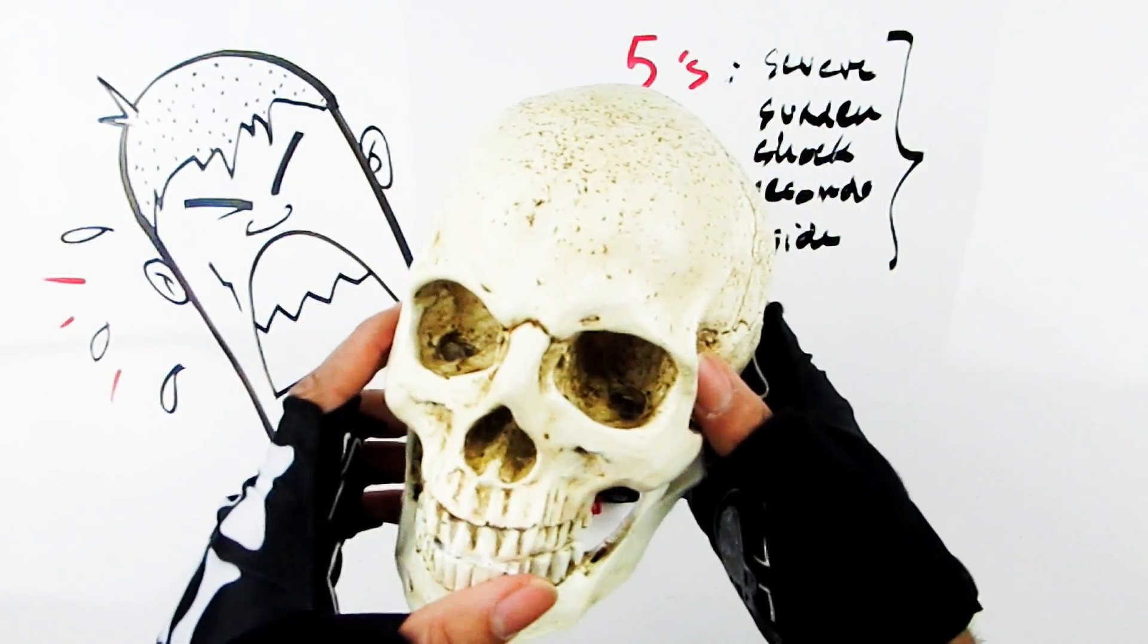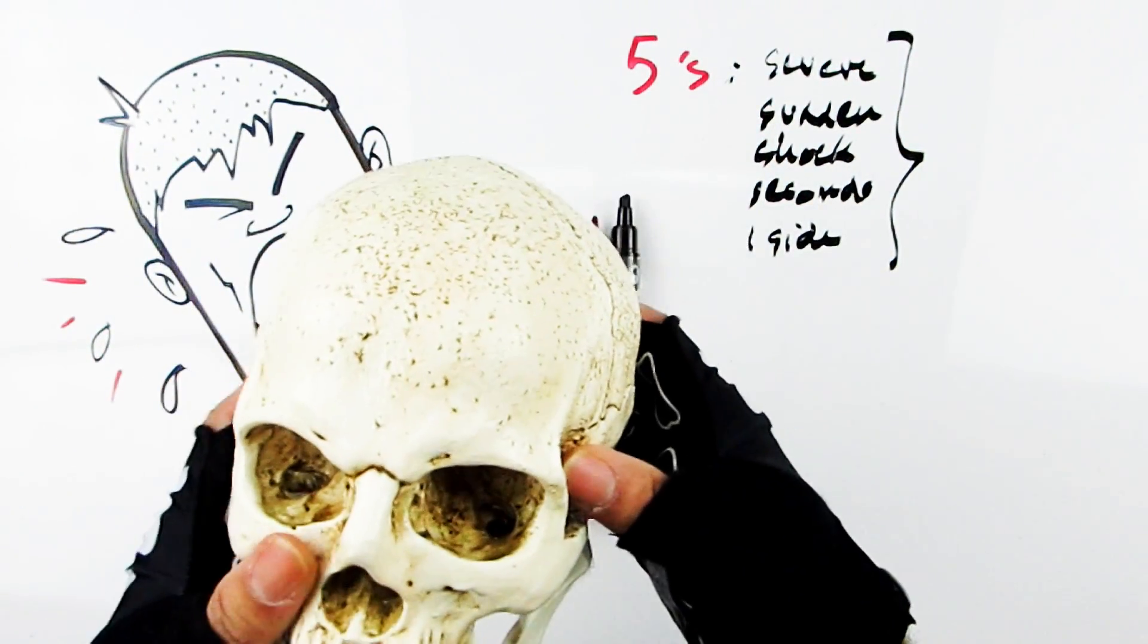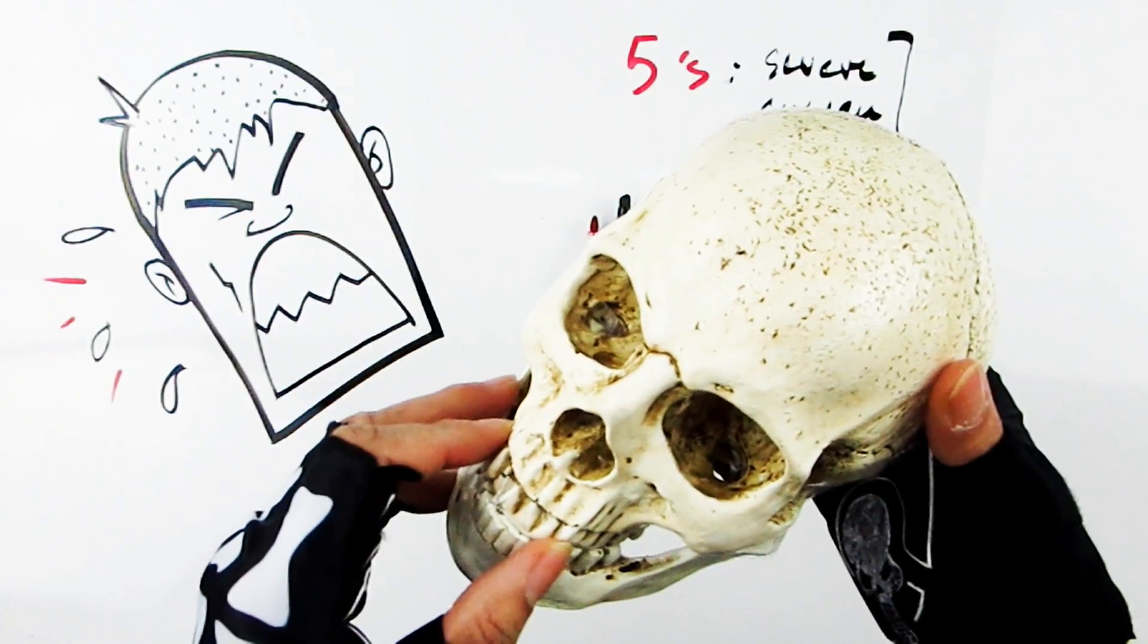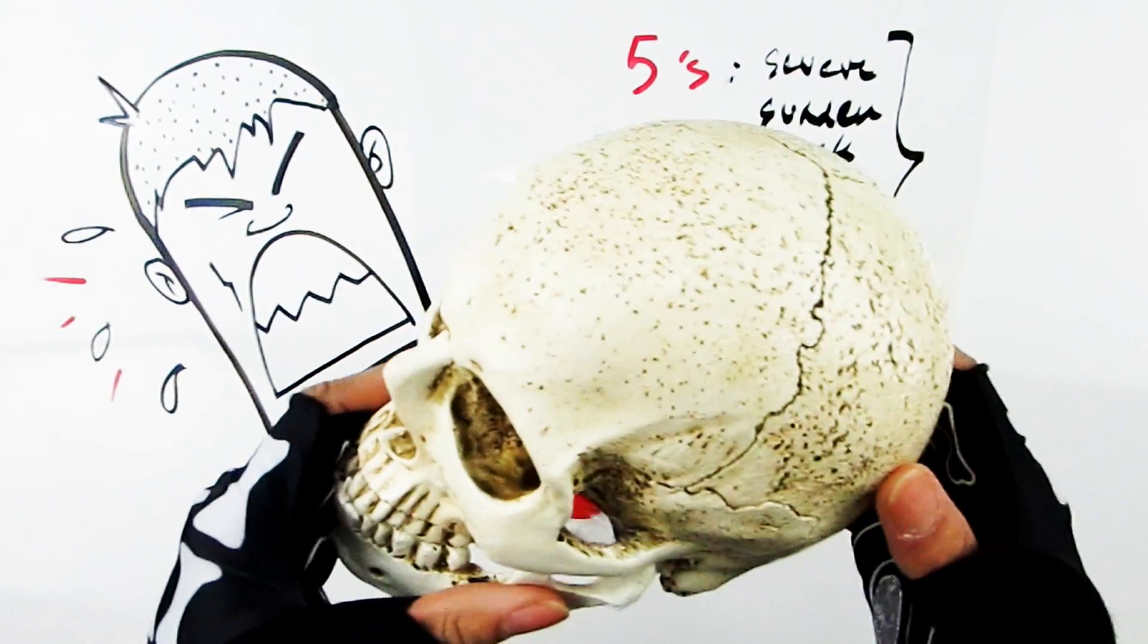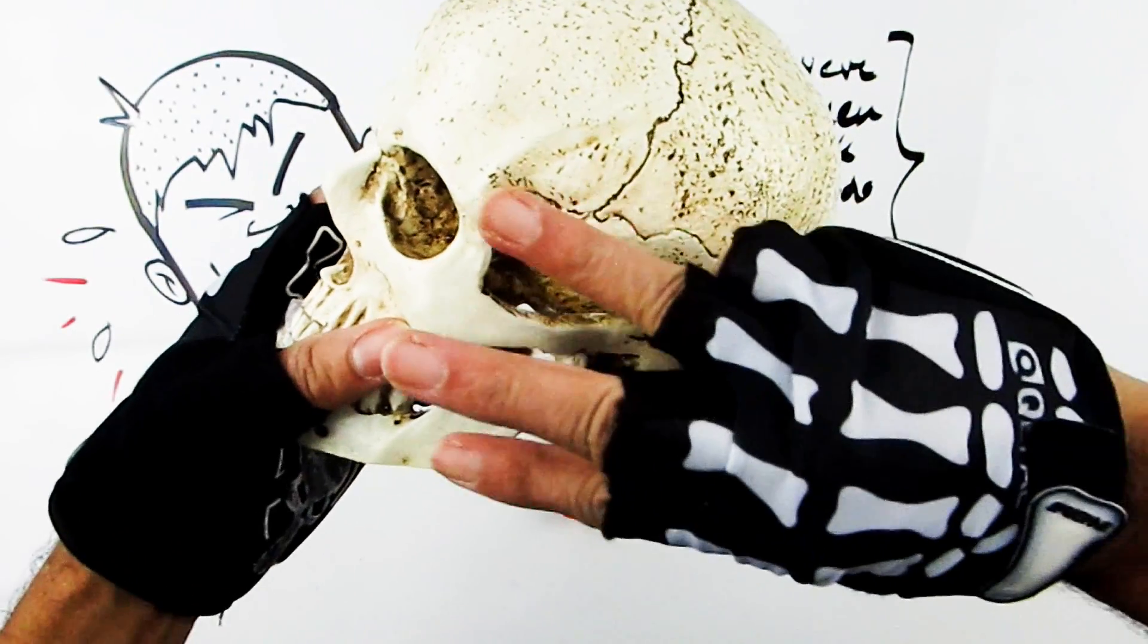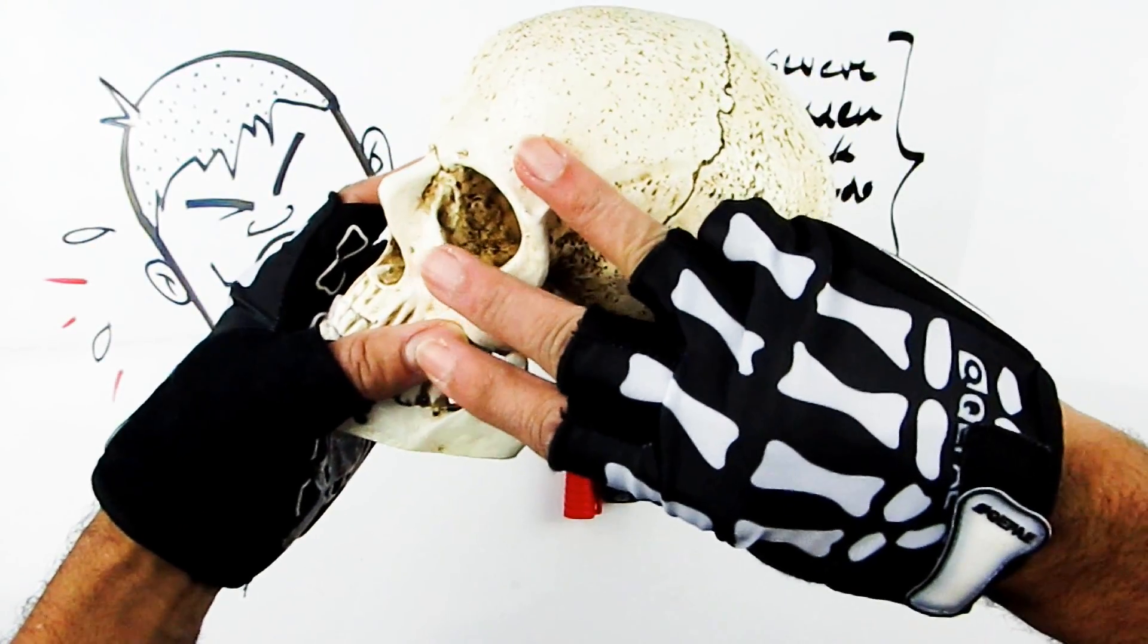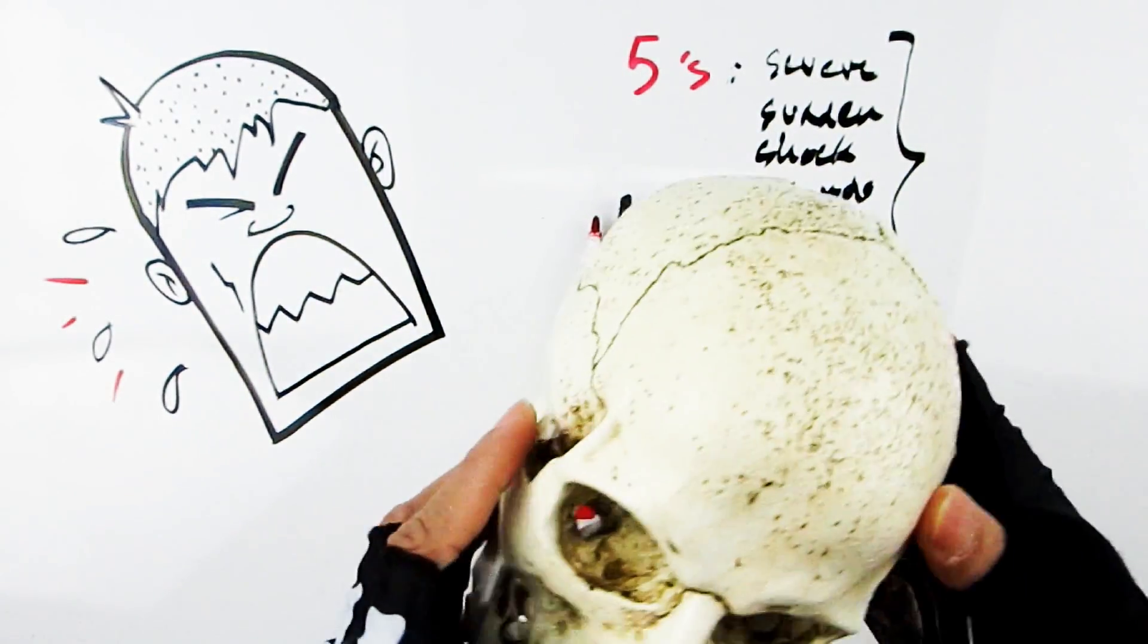The next thing that will clue us in that it might be trigeminal neuralgia, in addition to those features we just described, is it's usually in people over 50 years old. That being said, it can happen in any age group. The lady that I saw in the last month I think was in her late 40s. The nerve passes out the face and has these three branches that wrap across, and you can have trigeminal neuralgia in just one nerve or two or all three tributaries.